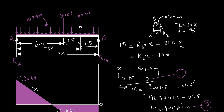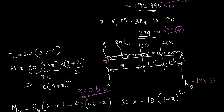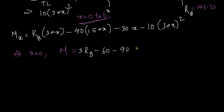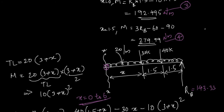This value should be equal to 279.99, because your point is the same — it's at the 30 kN load location. Your 279.99 calculated in the second moment equation should match this value. Let's check: 143.33 times 3 minus 60 minus 90 equals 279.99 newton-meters. That is the same, confirming your fifth moment value.